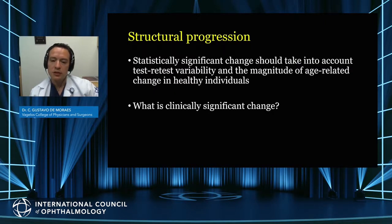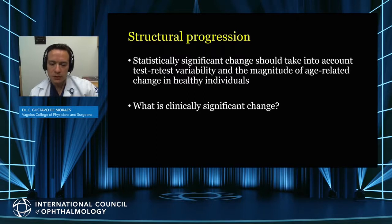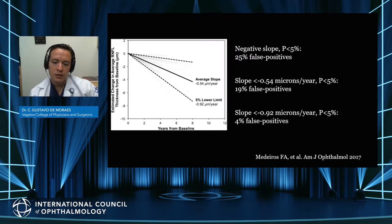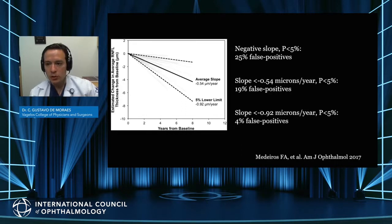Statistically significant change should take into account whether it exceeds test-retest variability and age-related or physiologic change. The question is always what constitutes clinically significant progression with OCT. In a paper by Medeiros and colleagues, the average rate of RNFL progression with OCT is approximately 0.5 microns per year. To be more specific and lower false positive rates, a rate of progression of 0.9 microns per year may be more useful when defining progressive cases.